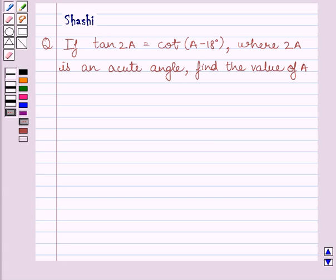First of all, let us understand that cot 90 minus theta is equal to tan theta, where theta is any acute angle in a right triangle. This is the key idea to solve the given question.